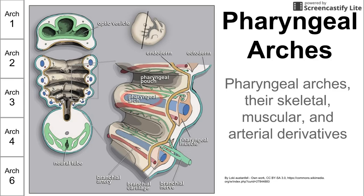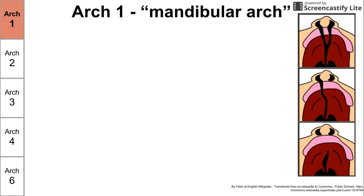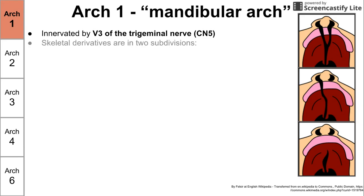Let's begin with arch one, also called the mandibular arch. It's innervated by V3 of the trigeminal nerve, which is cranial nerve five. The trigeminal nerve has three main branches, and arch one is innervated by V3. The skeletal derivatives of arch one can be broken down into two subdivisions: the upper jaw and the lower jaw.